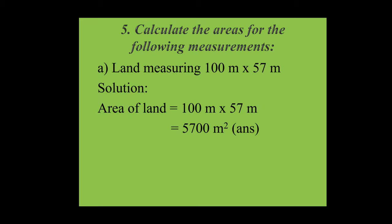Why is the unit square meters? Because when we multiply meter by meter it turns into square meters, and we already know the SI unit of area is square meters.